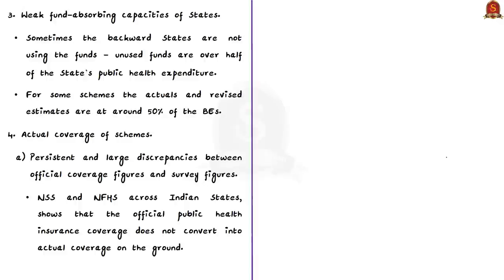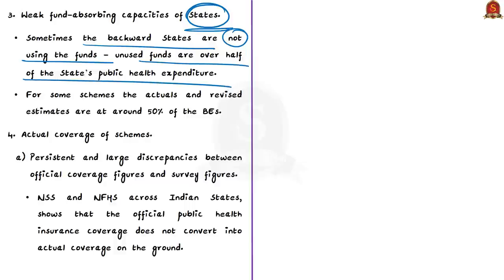The next issue is weak fund-absorbing capacity of states. While the first issue is not having enough funding, this issue is about not using available funds fully. The author notes that backward states like Bihar, UP, Odisha, Madhya Pradesh, and Rajasthan are not using the funds — in some cases unused funds are to the tune of over half of the state's public health expenditure. For some schemes, actuals and revised estimates are at around 50% of the budget estimates, meaning only half the estimated budget is actually used.